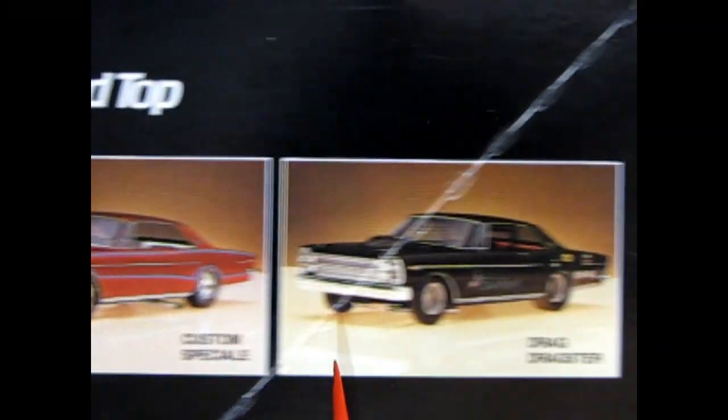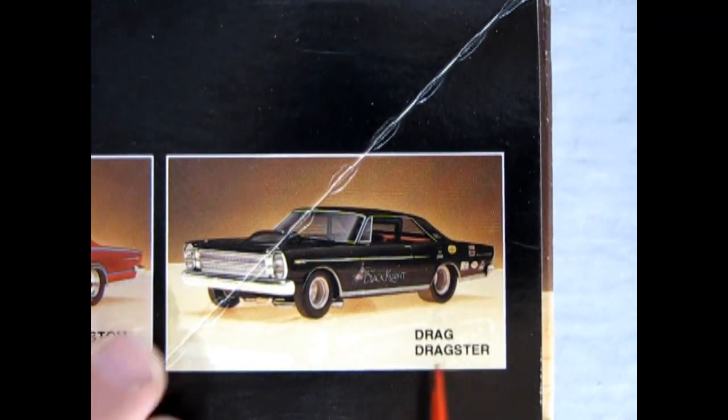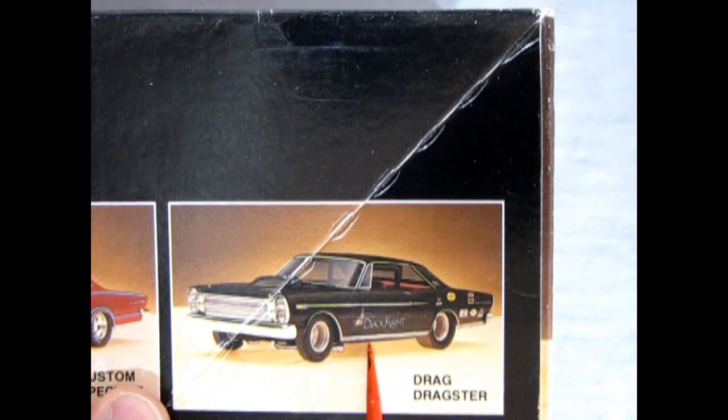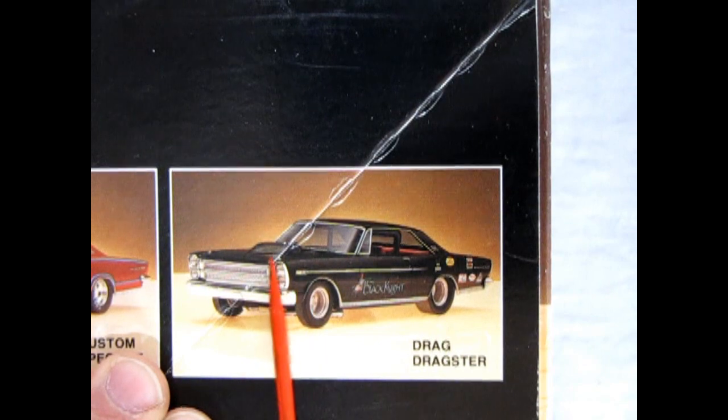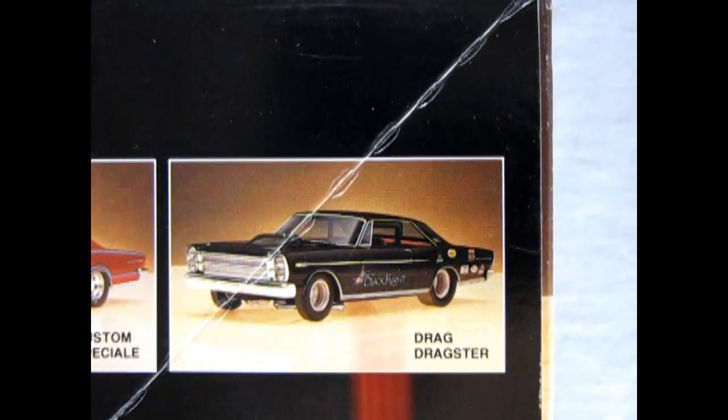And then we get the Dragster version, which is always pretty awesome. It's got the Black Knight horse on there. It's a very cool decal. As well as the big 427 induction hood. Sort of very similar to the Ford Thunderbolt.